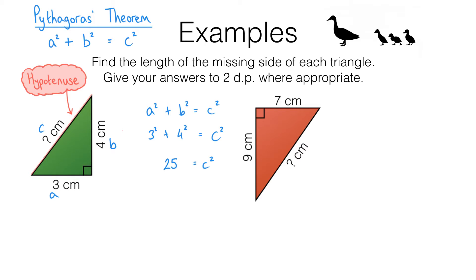Now let's remind ourselves what we're looking for. We're looking for the length of the missing side, which in this triangle is C. We have C squared, so to get to C we need to take the square root of C squared, which means we take the square root of 25. That missing length C is simply the square root of 25, which equals 5. So the missing length is 5 centimetres.